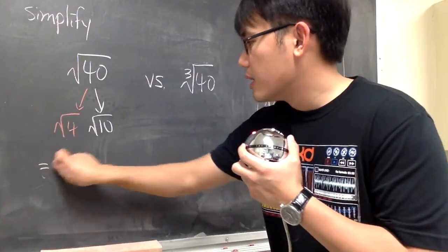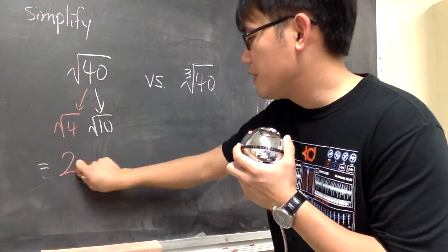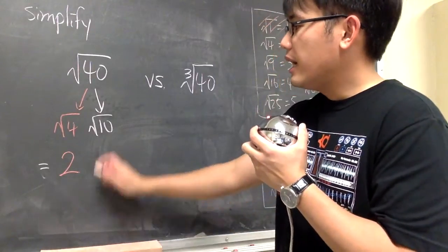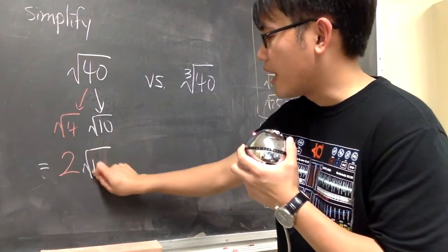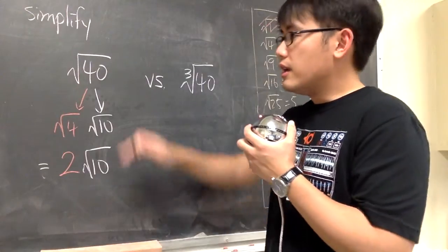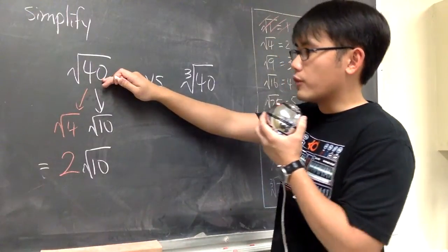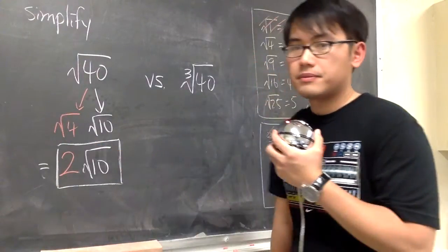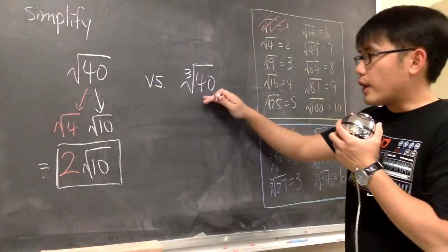This right here, square root of 4, as I mentioned, it's going to give us a nice number, which is 2. Right? Square root of 4 is equal to 2. And then square root of 10, we just maintain what it is. So the simplified version for square root of 40 is just going to be 2 square root of 10. This right here is it.